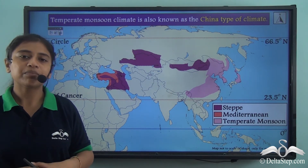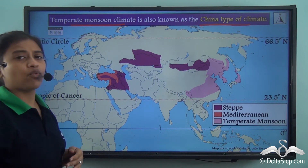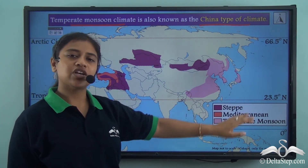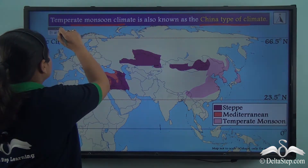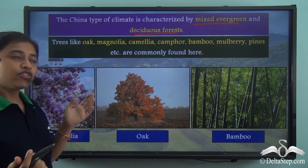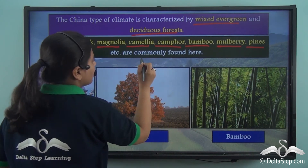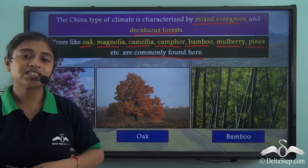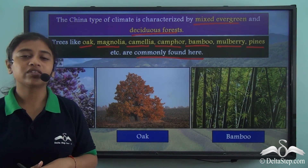The third subtype of the temperate type of climate is the temperate monsoon climate, also known as the China type of climate, as it covers most of China as well as parts of Korea and Japan. The China type of climate is characterized by mixed evergreen and deciduous forest, commonly including Oak, Magnolia, Camellia, Camphor, Bamboo, Mulberry, and Pines. It features long hot summers with high annual precipitation and dry winters.